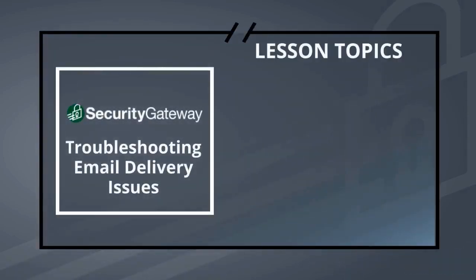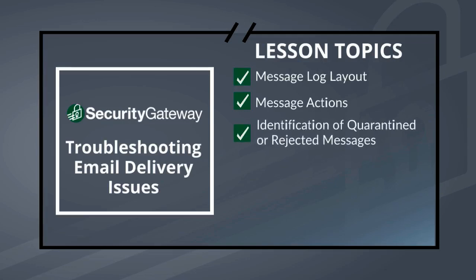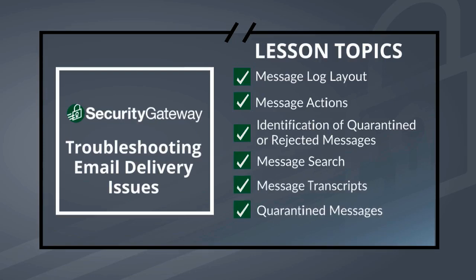This lesson covers the following topics: the layout of the message log; actions that can be performed on messages such as search, re-deliver, marking a message as spam or non-spam, or whitelisting or blacklisting the sender; how to easily identify quarantined or rejected messages; the message search feature; message transcripts; quarantined messages, including user quarantines as well as the administrative quarantine; message queues, including messages queued for delivery and the bad messages queue, which contains messages that could not be delivered.